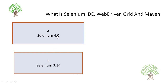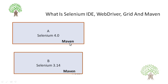Suppose A uses Selenium 4 and B uses Selenium 3.14 version, which is actually not good. Every team member should be working on the same version so that when code merging happens at the end there are no issues. But A doesn't know what version B is working on and B doesn't know what version A is working on. That creates a misunderstanding and problem in the future. To avoid this we use Maven. In Maven, both A and B will configure Maven on their PCs. Then we have a file known as pom.xml.